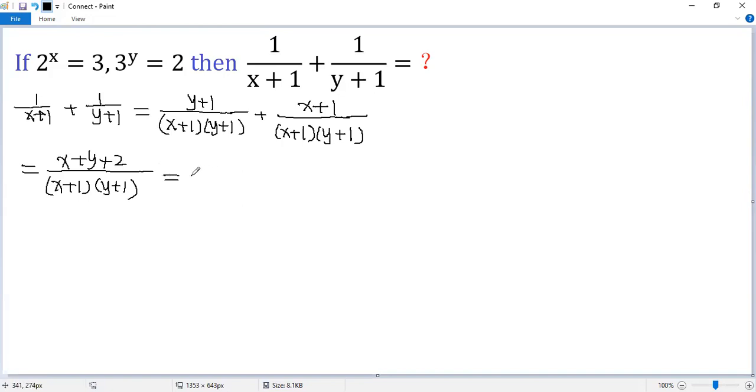Now let's expand the bottom. So we get x times y, so xy, x times 1, so x, 1 times y, so y, 1 times 1 plus 1. The top, x plus y plus 2.